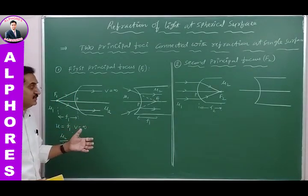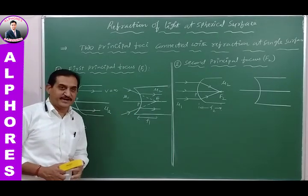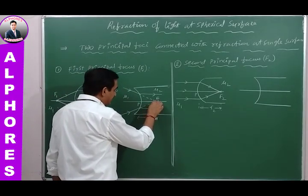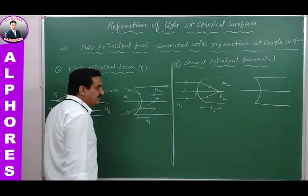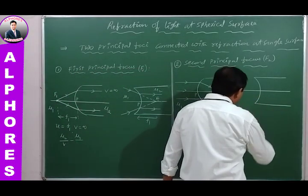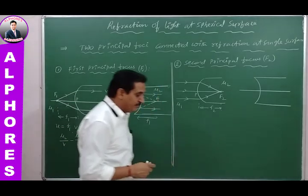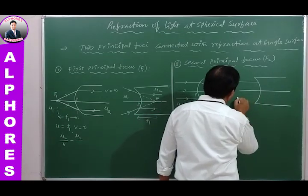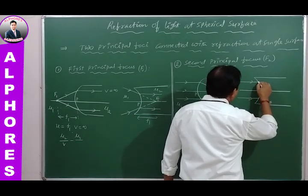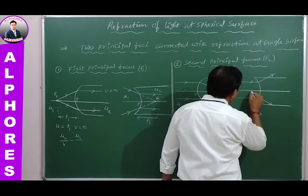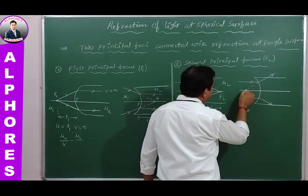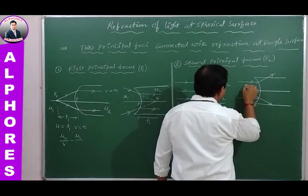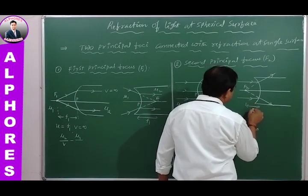For a concave spherical refracting surface, light rays converge to a point which is taken as the first principal focus. The concave surface also has a second principal focus F₂. When a parallel beam is incident, after refraction the light rays appear to diverge from this second principal focus point F₂.